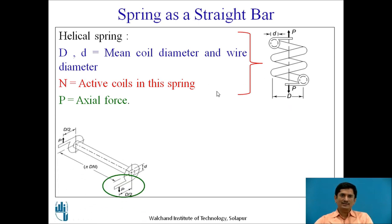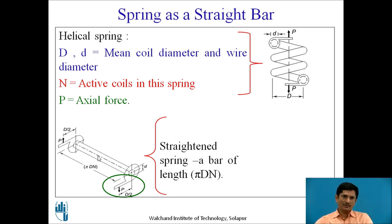It can be assumed as a straight bar, a straightened bar of length pi DN. If I extend this spring, if I make it straight, it will be a bar of length equal to pi DN. Further we are going to assume that this bracket is attached at the distance D by 2 to the end of the spring and a torsional moment is applied at the end of the bar formed from the spring.